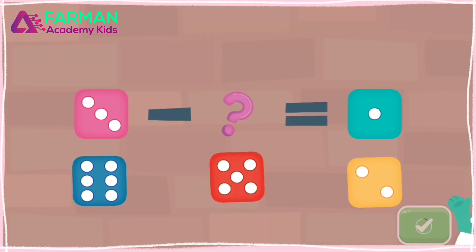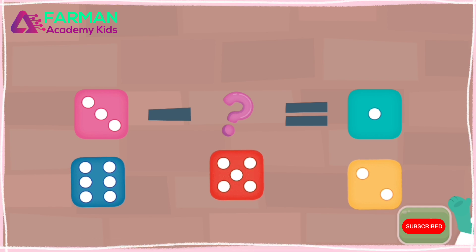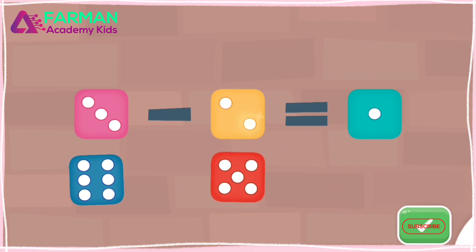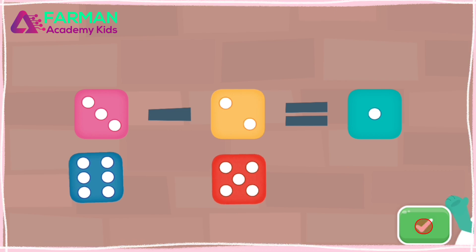3 minus what equals 1? Drag the correct die to the question mark. Cool! 3 minus 2 equals 1.